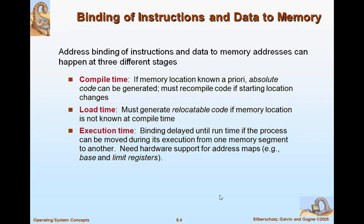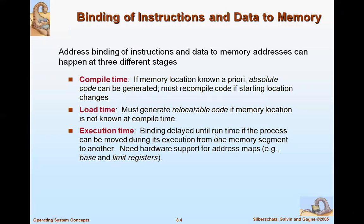At compile time, if the memory location is known prior to execution, absolute code can be generated. At load time, if the memory location is not known during loading, the address is generated then. At execution time, binding is delayed until runtime — this is used if the process can be moved from one memory segment to another during execution.